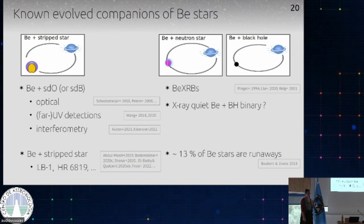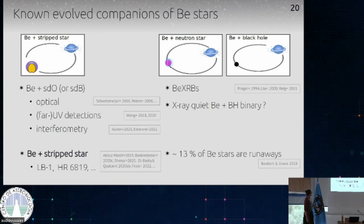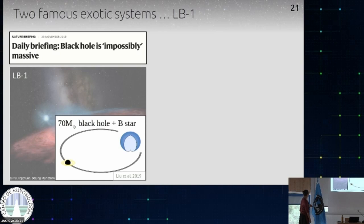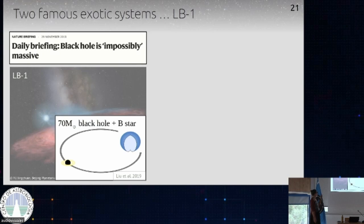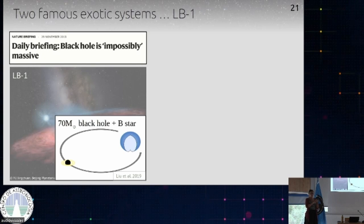I want to walk you through what these systems actually were, because they were previously proposed to contain black holes and got a lot of attention. The two stars I want to mention: first, LB1, which was actually in the news because it was initially proposed to contain a B-type star and a 70 solar mass black hole. The 70 solar mass black hole was in the mass gap, quite massive, and didn't work out with any black hole formation theories — so a lot of people jumped on it to revise formation channels and to test whether the 70 solar mass black hole claim was trustworthy.